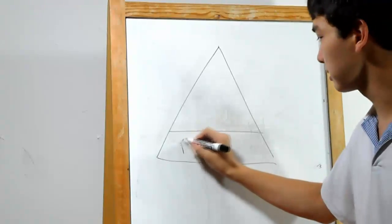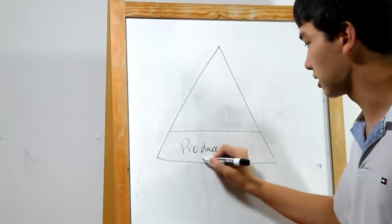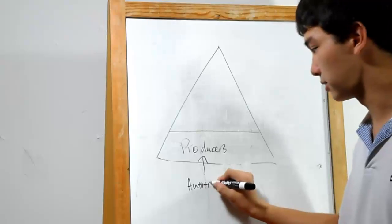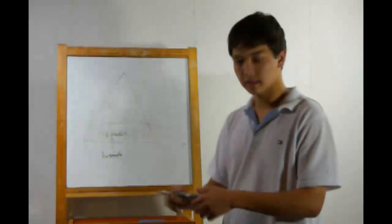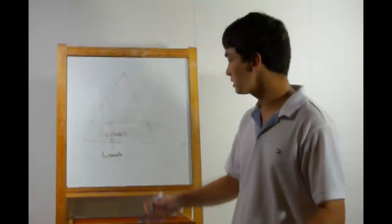Down here on the bottom level, we have the producers. The producers make their own food. In other words, they're autotrophs. You can use that fancy word to impress teachers. This basically means plants. Grass, bushes, trees. These are all producers.